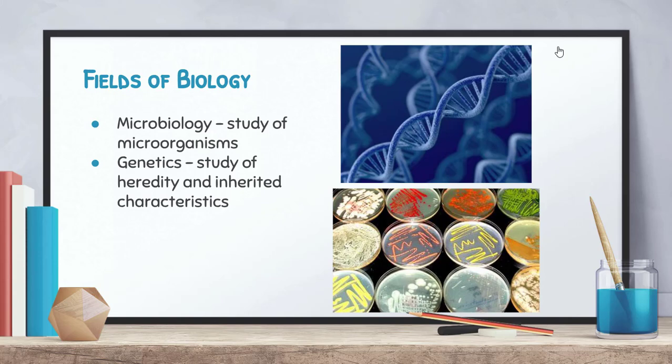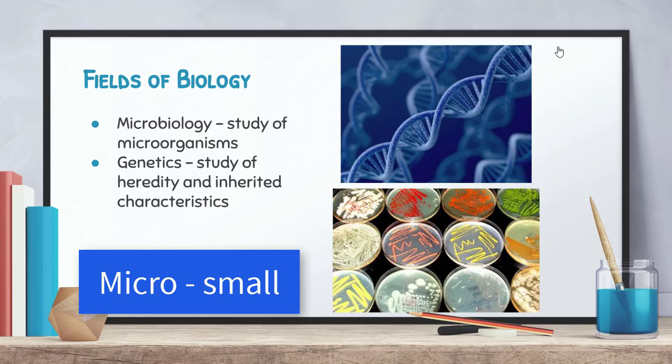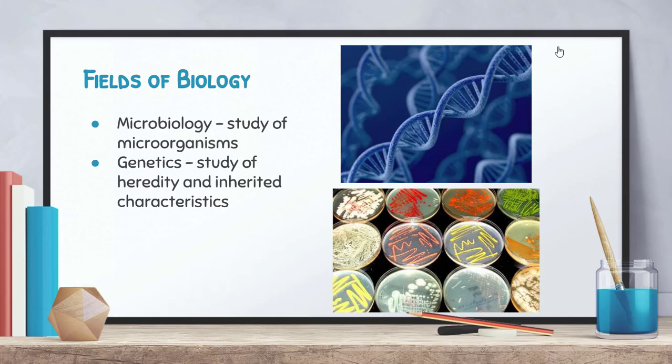There's a little bit of other fields of biology. We have microbiology. Micro, that root means small, so we're looking at the study of microorganisms, things like bacteria, things that are unicellular, if you remember that from our last video. We also look at genetics, which is the study of heredity and how characteristics are inherited from parent to offspring. As you can see in the top picture here, we have a double helix structure of DNA, and below that, we have a variety of different plates of bacteria. We'll be studying both of these throughout this course.